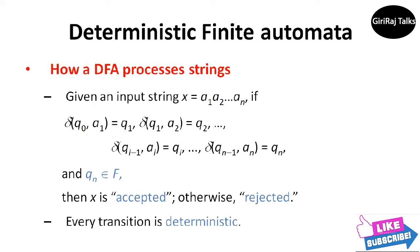To find the state that the DFA enters after processing the first input symbol a1, we process the next input symbol a2 by evaluating delta of q1 comma a2. Let us suppose this state is q2. We continue in this manner finding states q3, q4, q5 up to qn, such that delta of qi minus 1 comma ai equals qi for each i.